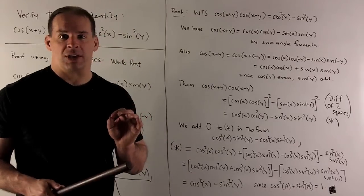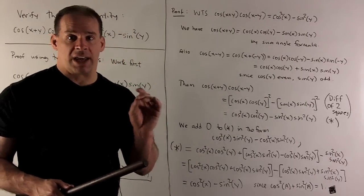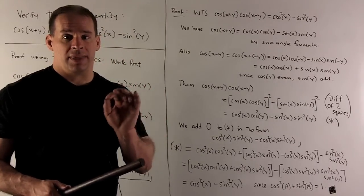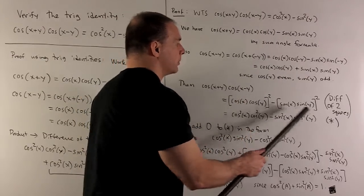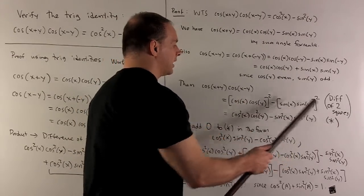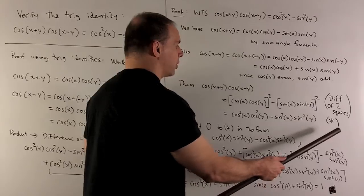We multiply cosine x plus y, cosine x minus y. Then, we note we have things set up. So, we have a difference of two squares. So, we invoke that. And that gets us to this step, which I'm going to call star.